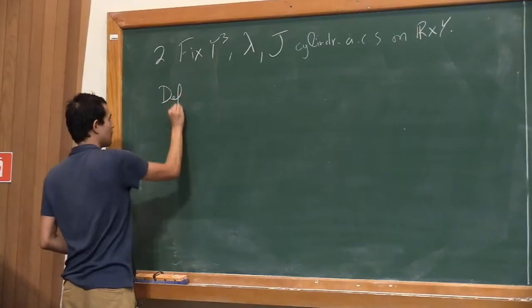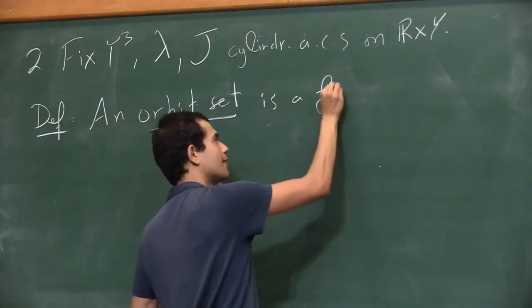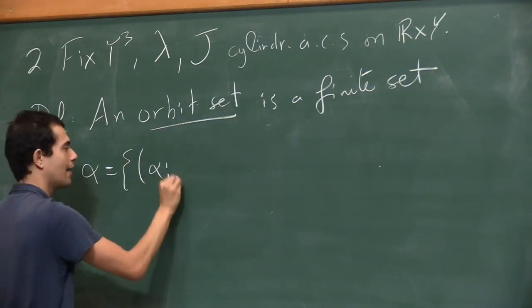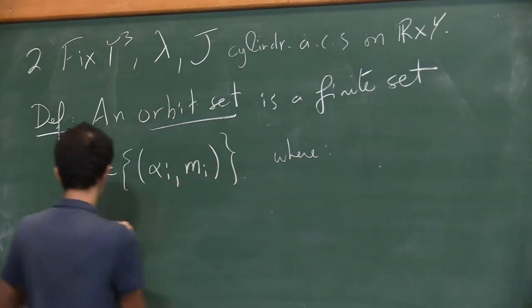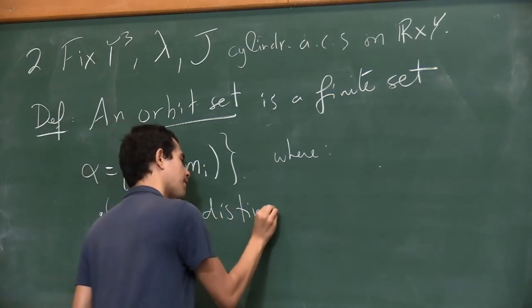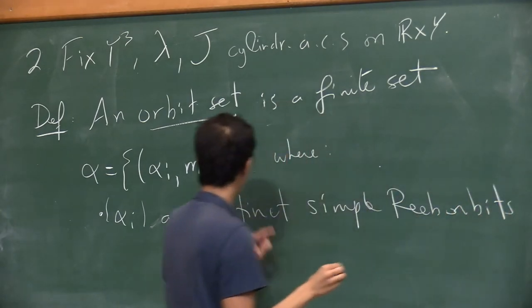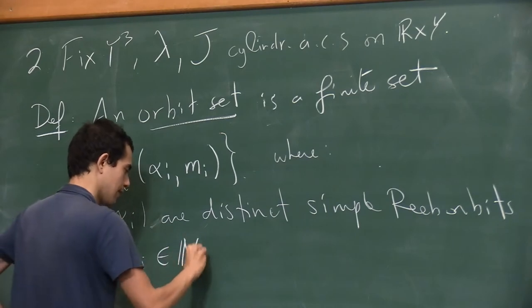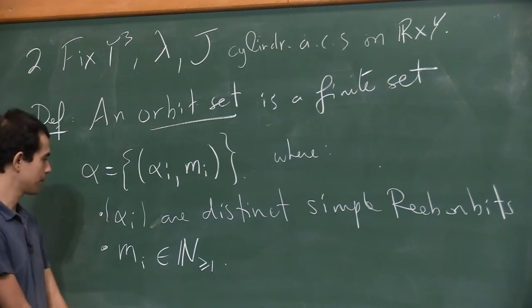An orbit set is a finite set, which I'm going to call alpha. So it's {α_i, m_i}, where the α_i's are distinct simple Reeb orbits, and m_i is the multiplicity — a positive integer, at least one.